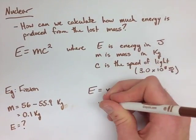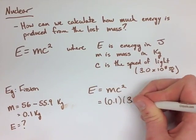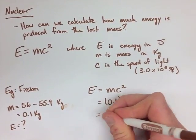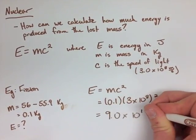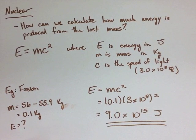We want to find the energy. We sub in all of our values, and we end up finding that the energy produced here is 9.0 times 10 to the 15 joules of energy, which is a lot if you consider we only use 0.1 kilograms, or 100 grams of a substance.